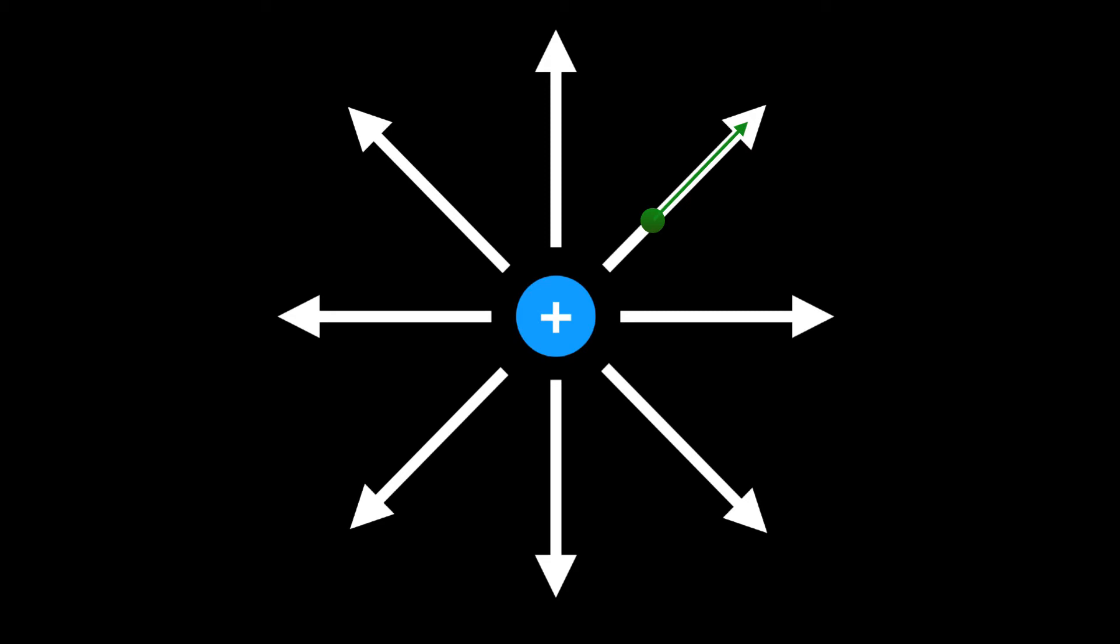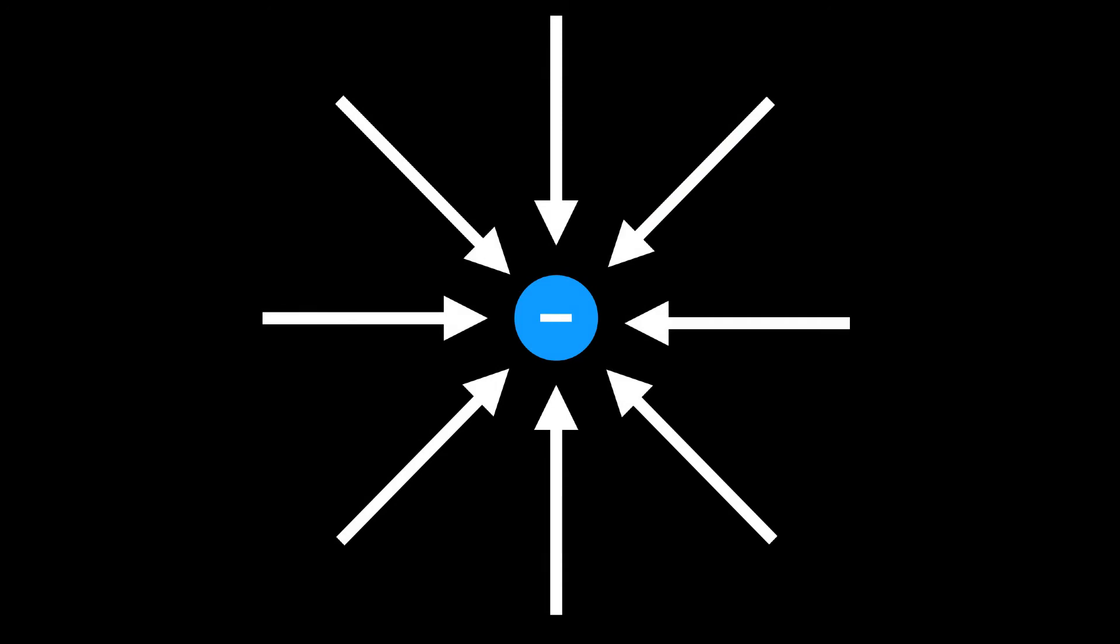All right, let's take a look at another example. So here we have a negative point charge, a single negative point charge. But here the electric field lines are going from infinity to the negative charge. So we see the reverse of what we saw earlier.